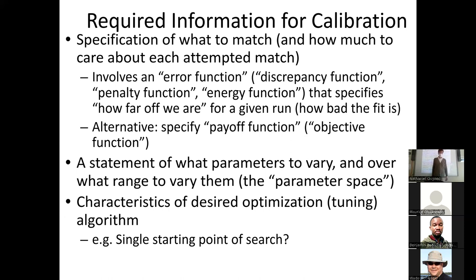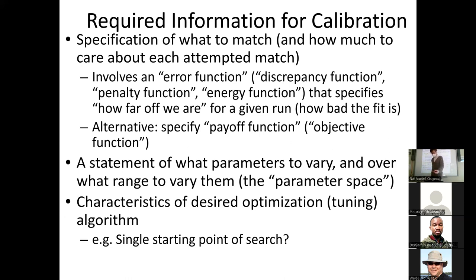So what do we have to specify for calibration? We have to say what we want to match, how we match it — how we judge goodness of fit. We call it variously an error function, a discrepancy function, a penalty function, or for physicists an energy function. This specifies the discrepancy — specifies how far off the model's production is for autocorrelation, cumulative distribution, peak size, dominant modes, overall number of cases. How close did those match, pairwise, against corresponding data from the world? Beyond that, we have to say what parameters we want to vary and over what ranges. In this calibration we say: go vary contact rate and infection probability over this range to try to find the best value. And then what sort of optimization algorithm do we want to use? So it's like we have a hypercube where there's one parameter for each of the axes.